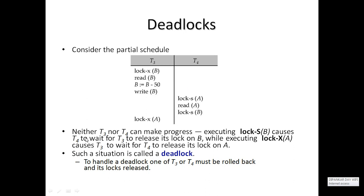This is the position where no two transactions can continue their normal executions — this is called deadlock. Neither T3 nor T4 can make progress. T3 waits for T4 to release its lock on data item A, while T4 waits for T3 to release data item B. To handle deadlock, one of T3 or T4 must be rolled back, or either transaction voluntarily releases the lock.